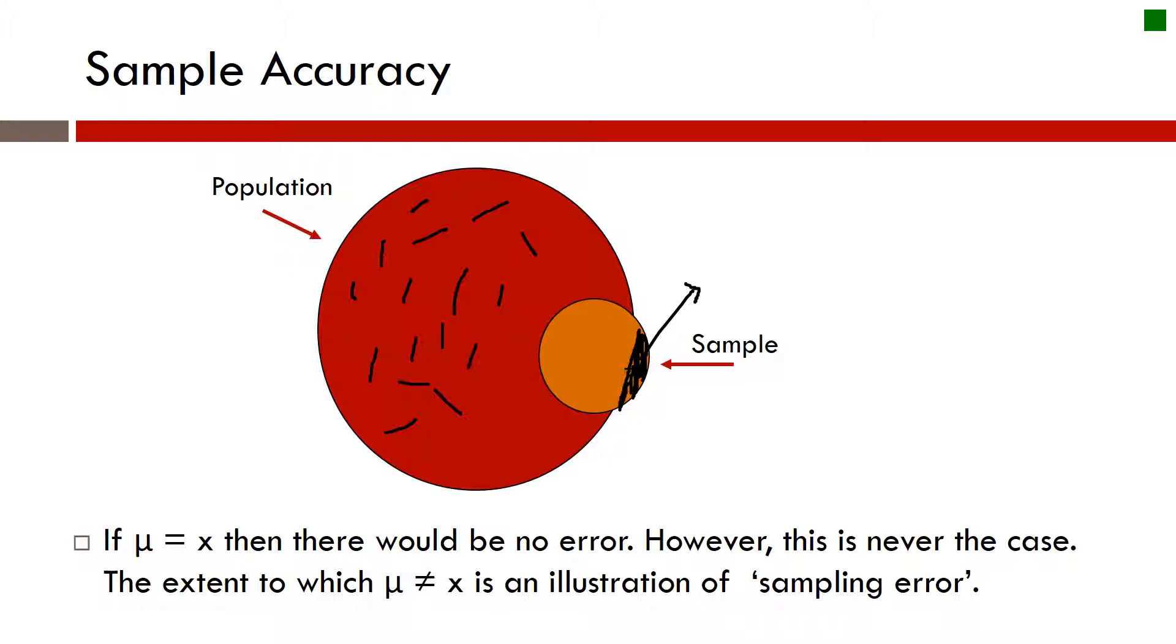So the extent to which this sample and the population don't match is an illustration of sampling error. It's error that's in our data as a result of the fact that we're using a sample. So that's that E that we want to think about and how much we're willing to accept in it. We have our population mean and our sample mean there.